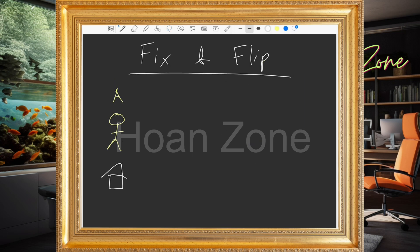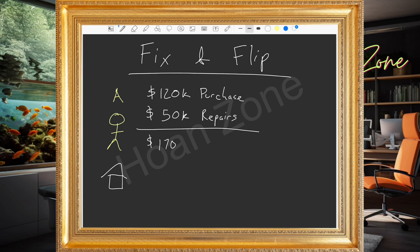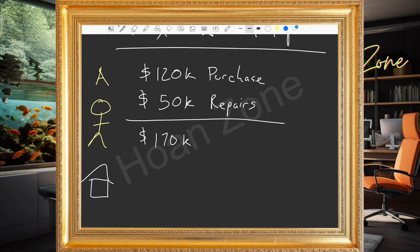Here's our friend buyer A, who owns that house. Let's go over the numbers — they bought it for $120,000, and in this example they're going to spend $50,000 in repairs. So the purchase price was $120,000 and repairs are $50,000, which means they're all in for $170,000 so far.